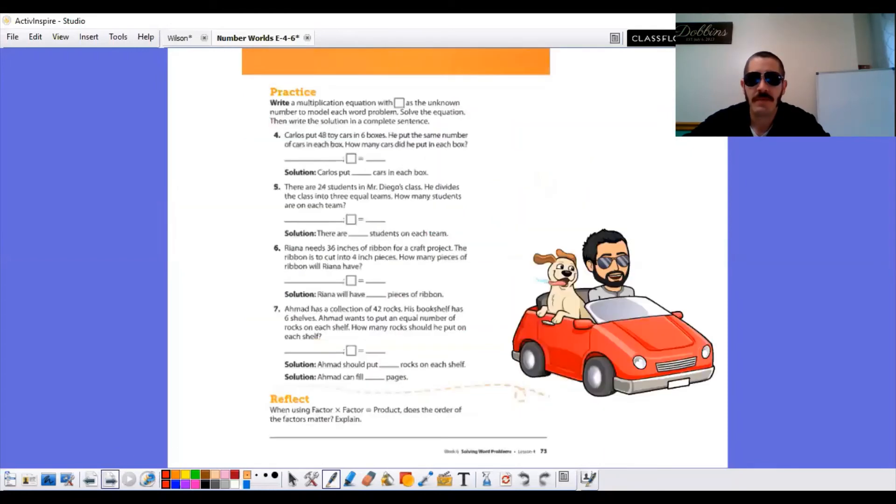Turn the page. We have for four, five, six, and seven word problems. You're going to read those. You are going to turn them into a multiplication sentence, find the missing number, and put that missing number into the answer.